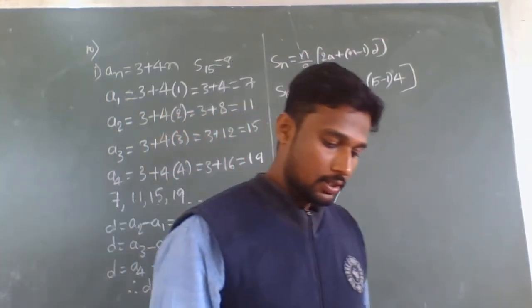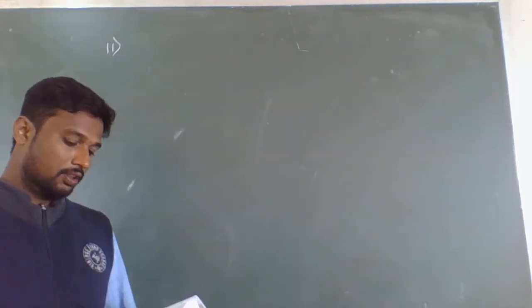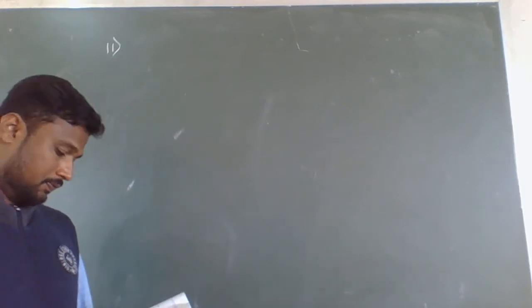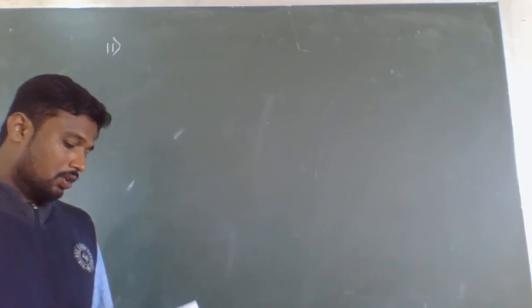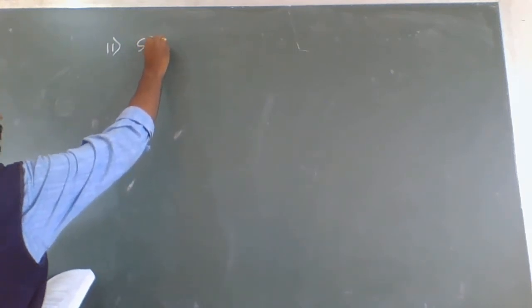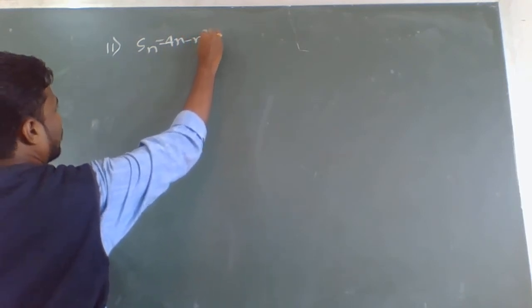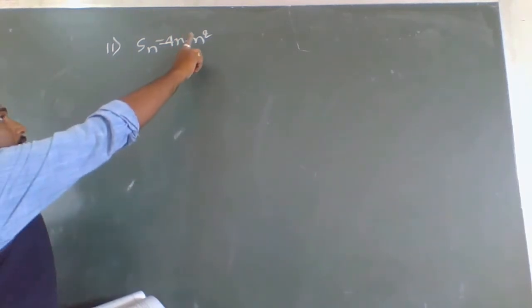Now I will discuss the 11th problem. In problem 11, if the sum of the first n terms of an AP is 4n − n², we are given Sn = 4n − n².